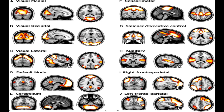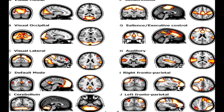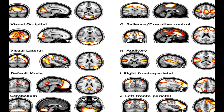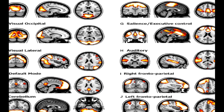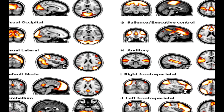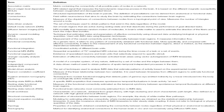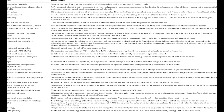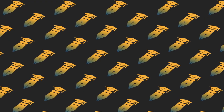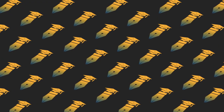A consistent finding in the fMRI literature is that healthy older adults present higher activity levels in some brain regions during the performance of cognitive tasks, which is usually interpreted as a compensatory mechanism. More recent approaches have focused on the study of functional connectivity, mainly derived from resting state fMRI, and have concluded that the higher levels of activity coexist with disrupted connectivity.